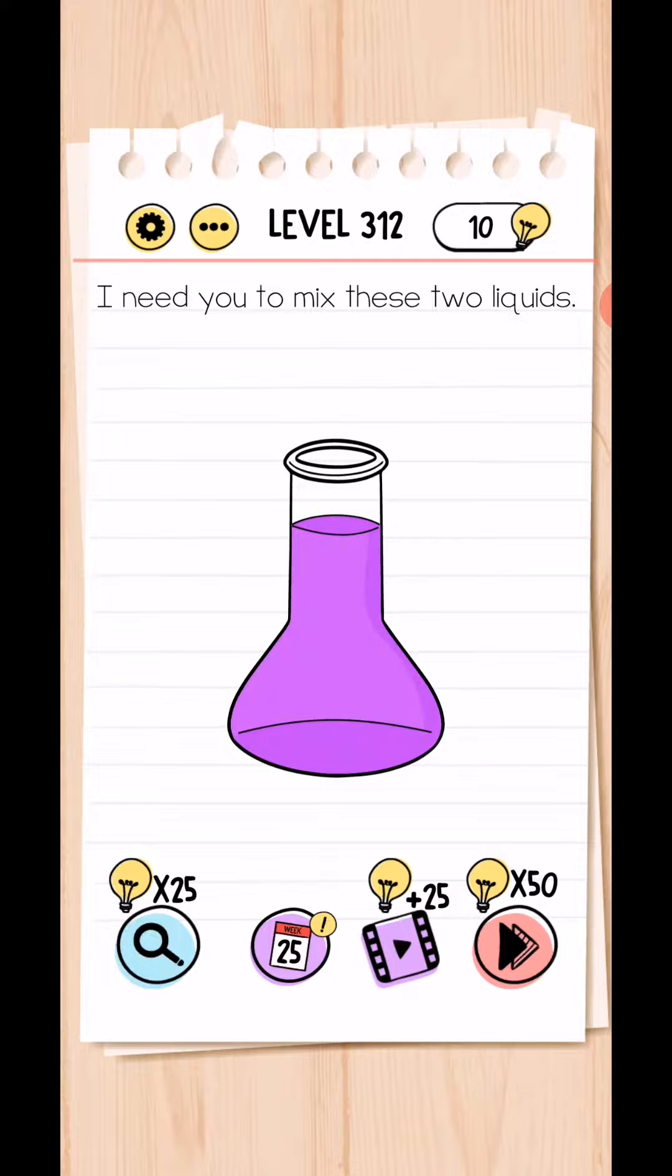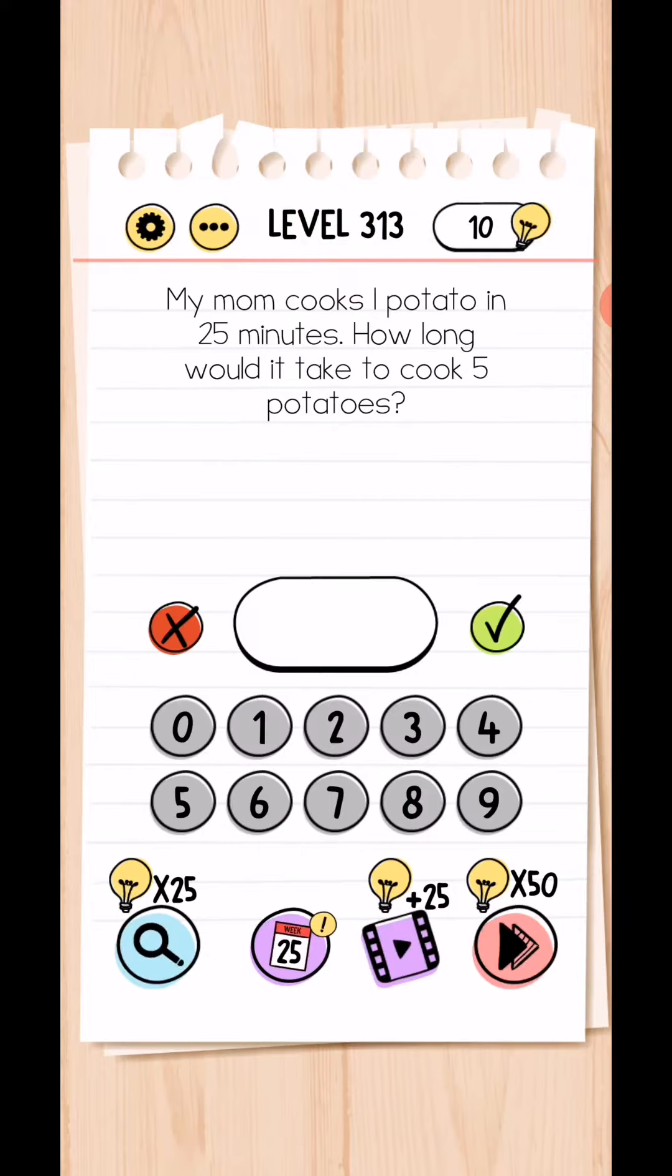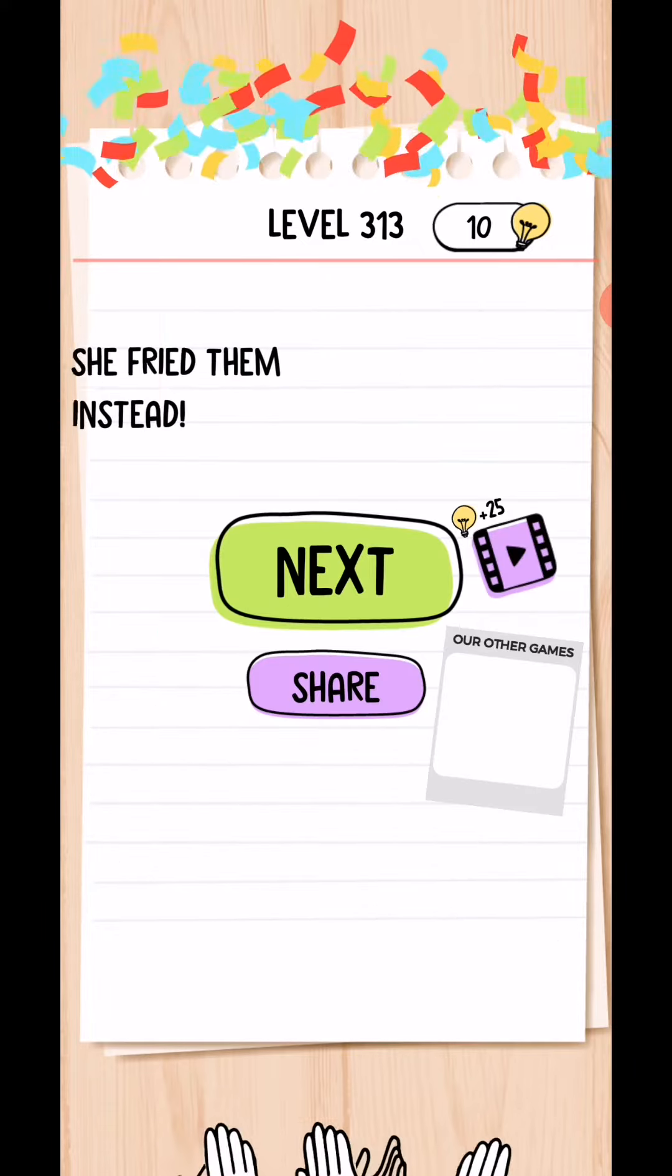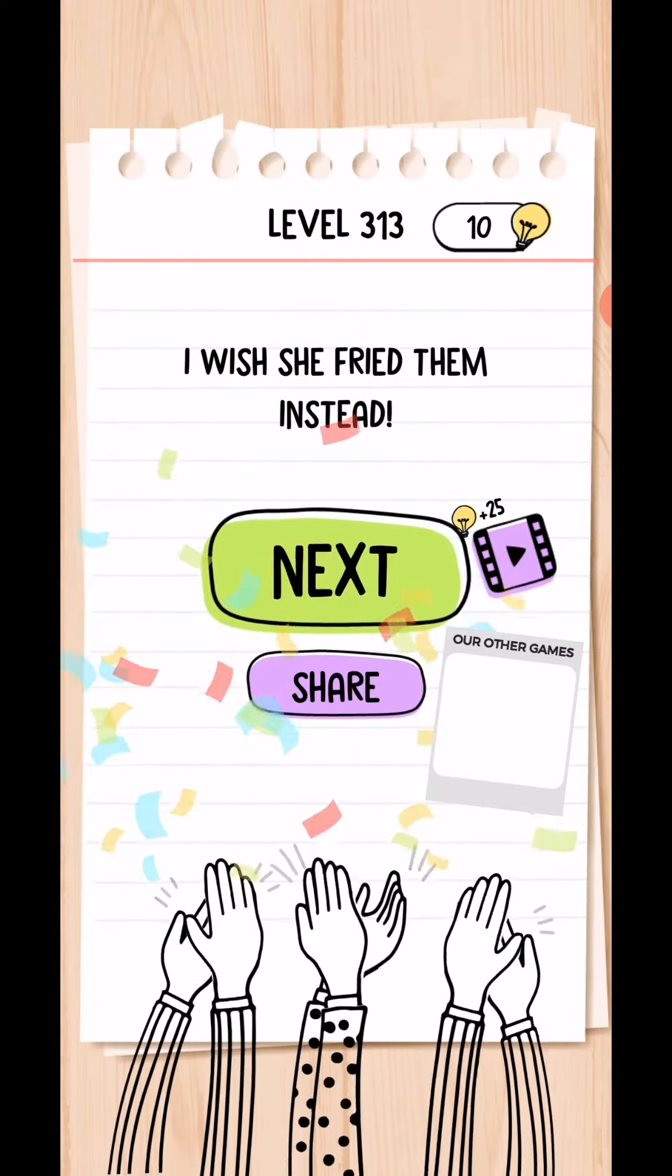Next. My mom cooks a potato in 25 minutes. How long would it take to cook five potatoes? Same, 25 minutes, because they cook together.